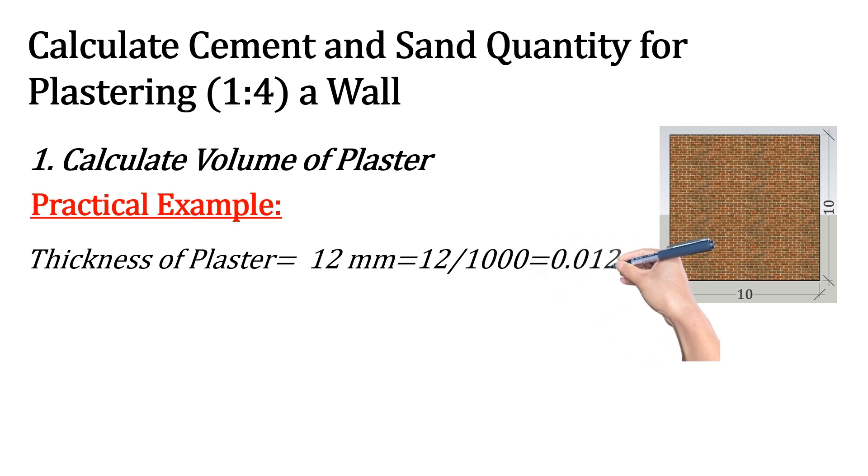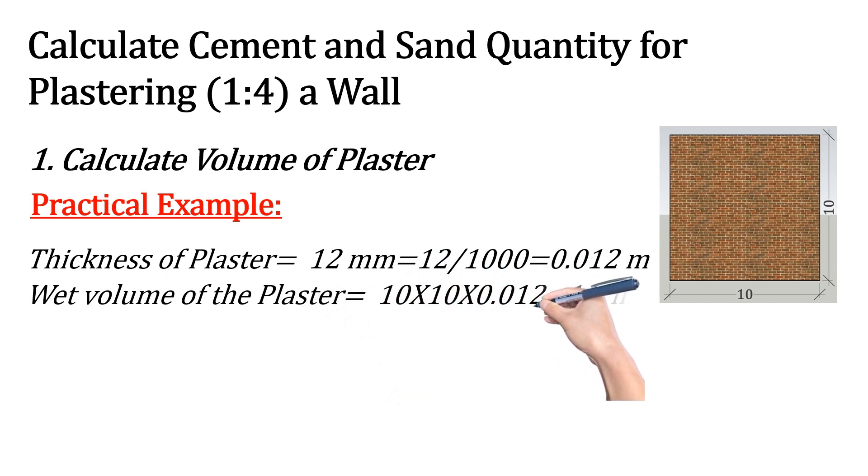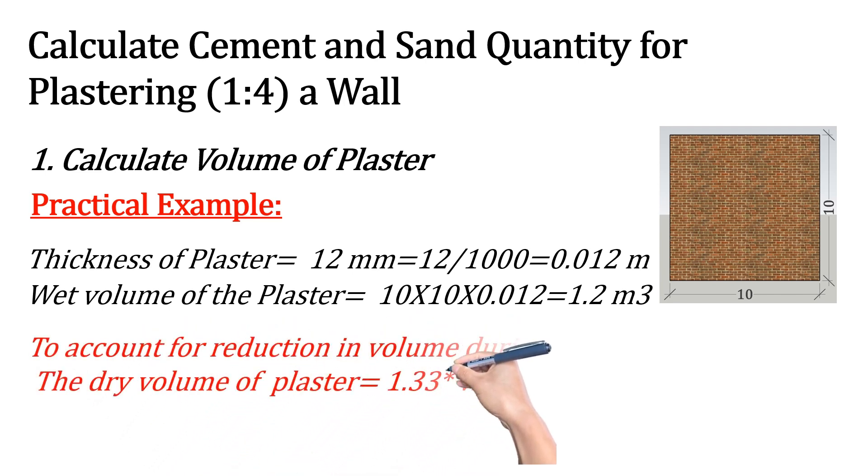That is 0.012 meters. To find the volume, we have to multiply these dimensions together: 10 into 10 into 0.012 equals 1.2 m³. To account for synthesis and wastage, we adjust this volume by multiplying by a factor of 1.33.